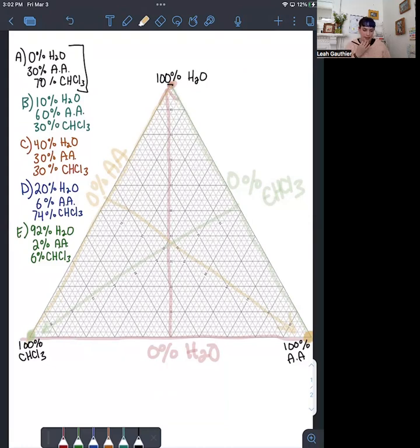The way that you translate a data point onto the graph is to consider the three different components. I have some example data points that I'll plot on here. For the first one, I have 0% water, 30% acetic acid, and 70% chloroform.